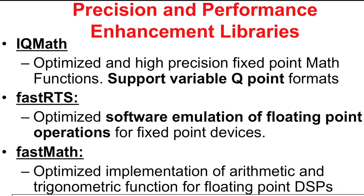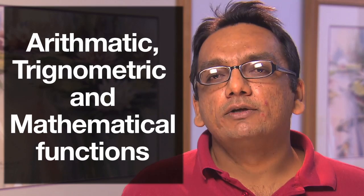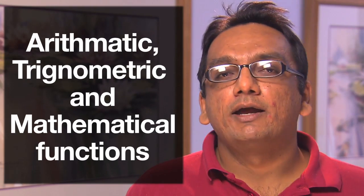The third set of libraries help implement high-accuracy algorithms on fixed-point C6X devices and also improve the execution speed of floating-point code on floating-point C6X devices. There are three main libraries in this category: IQMath library and FastRTS library for fixed-point devices, and FastMath library for floating-point devices. The IQMath library is a collection of highly optimized and high-precision fixed-point mathematical functions that support variable Q-point format for variables, including various arithmetic, trigonometric, and mathematical functions.